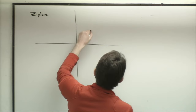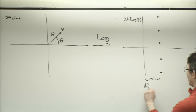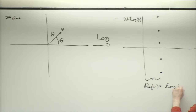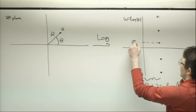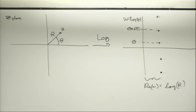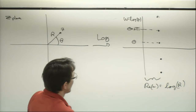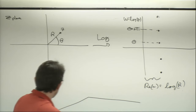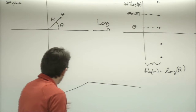Your functions can have multiple values. In the logarithm function, we had some r and theta in the z-plane. When we take log z in the w = log z plane, we have infinitely many solutions. The real part equals log r, but the imaginary part equals theta, and theta + 2 pi i, and theta + 4 pi i, theta - 2 pi i, and so on.